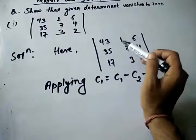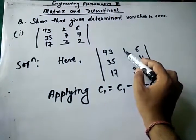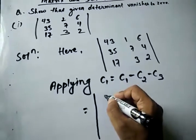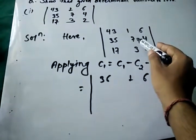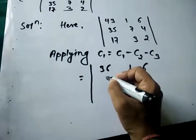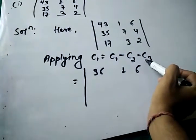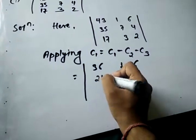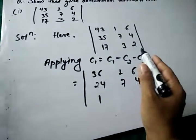Applying column 1 = column 1 − column 2 − column 3. So column 1 becomes: 43 − 1 − 6 = 36; 35 − 7 − 4 = 24; and 17 − 3 − 2 = 12.